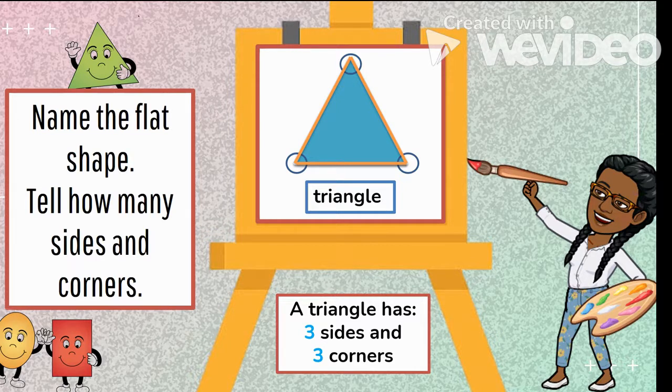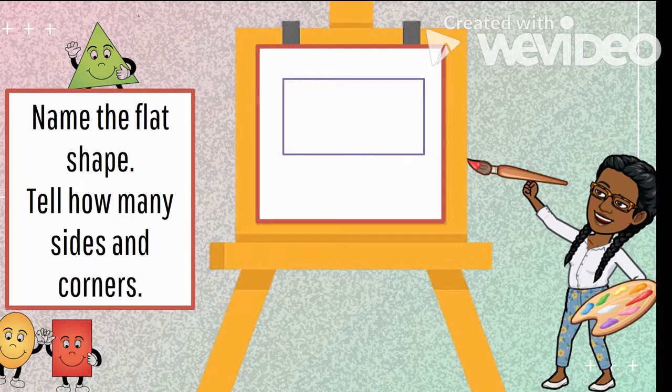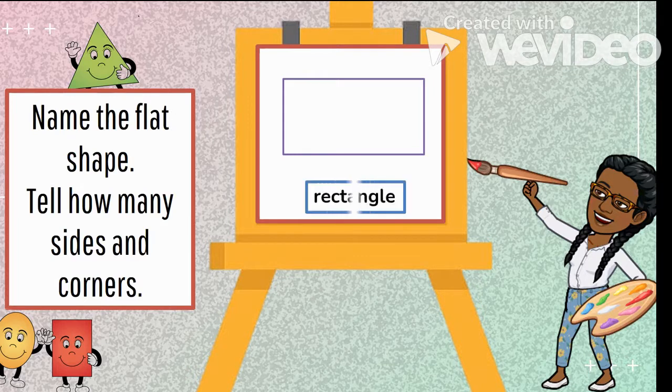Let's try another one. Can you name this black shape and tell how many sides and how many corners? I will give you a few seconds before I go on. Did you say this shape is a rectangle? Because if you did, you are correct.